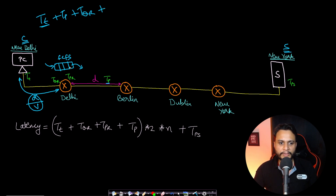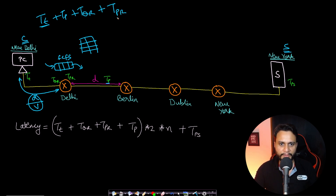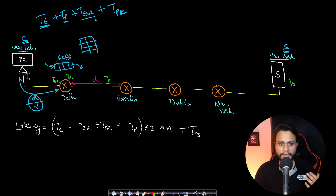Once the waiting time is over — which may be zero or greater than zero — your request is taken out by the router. The router processes your request using its routing table to determine which interface to use and where to send the packet for the next hop. This calculation time is called tpr, the processing time at the router. So we have four types of time: tt (transmission time on the physical wire), tp (propagation time over distance d), tqr (queue waiting time at the router), and tpr (processing time at the router).